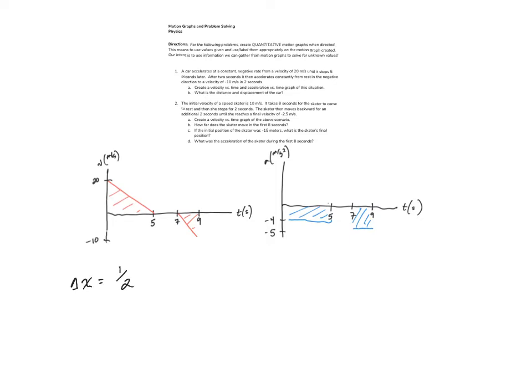So for displacement I am going to say one half times five times twenty minus one half times two times ten. Notice that I'm subtracting here because we have to keep in mind direction with displacement. So if we do this properly we should end up getting 40 meters for our displacement.